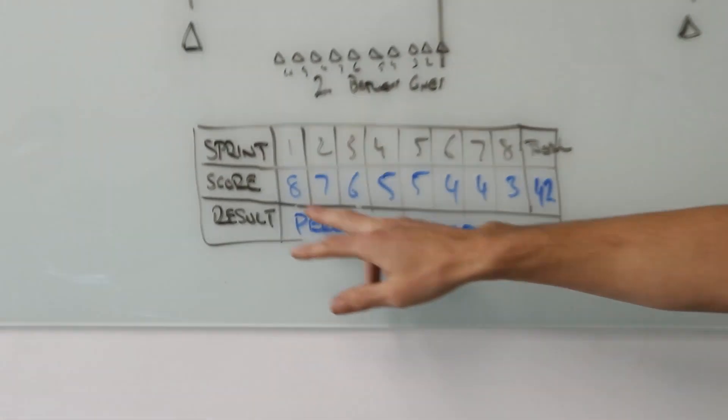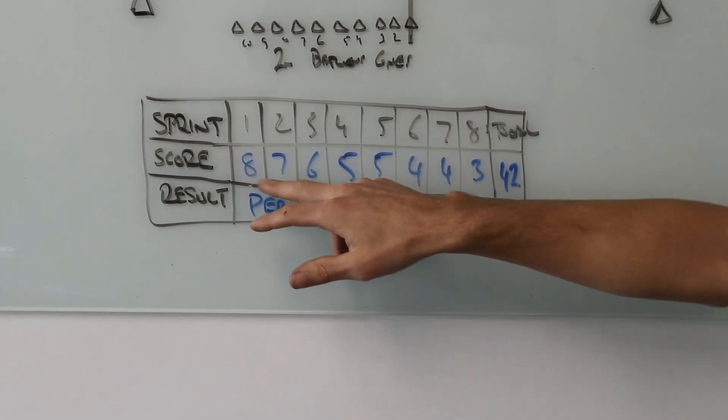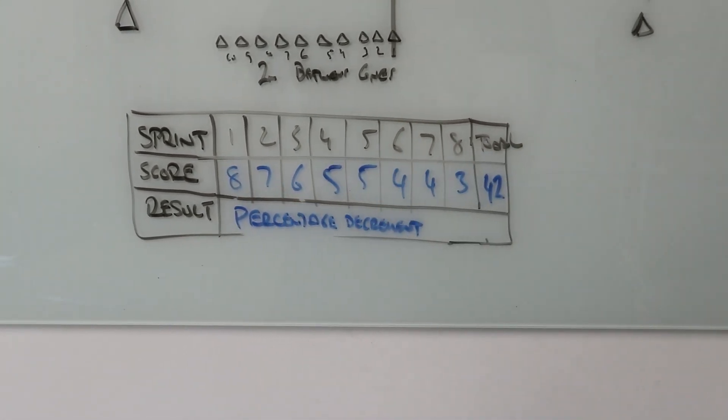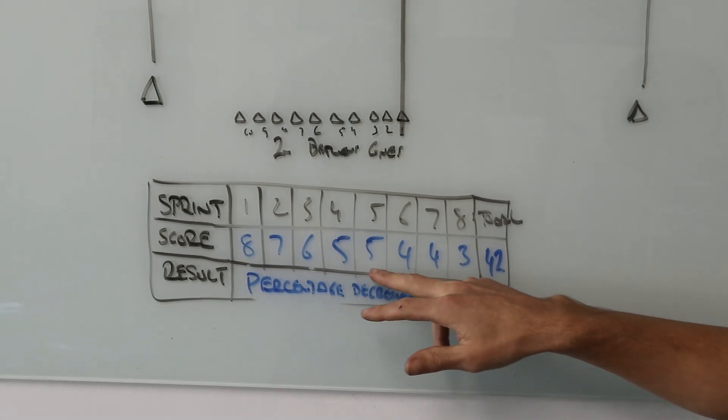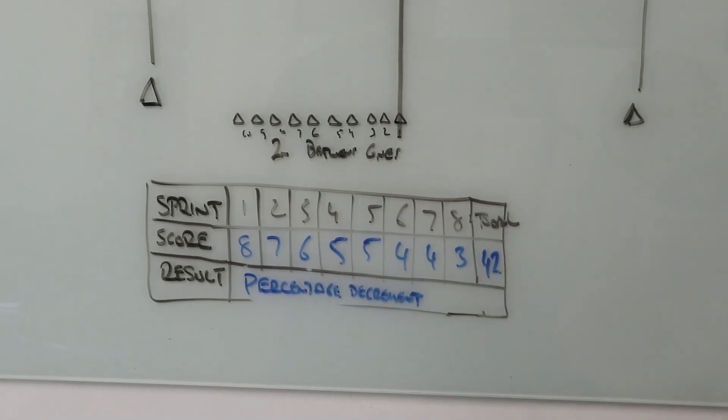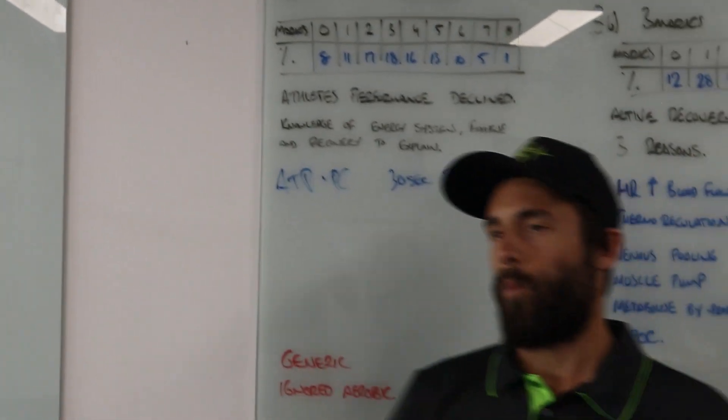We're now going to say, well that provides energy at a slower rate when compared to the ATP-PC system, still fast but it is slower. We would expect to see some fatigue and we start to see that drop off. The third sprint's down to six cones, the fourth and the fifth down to five cones.